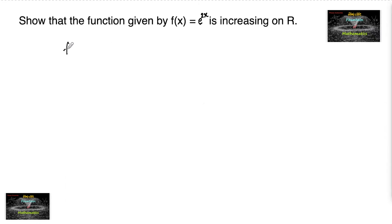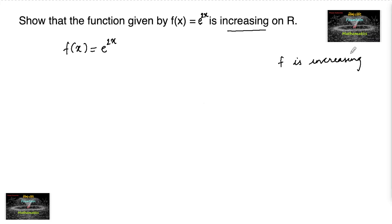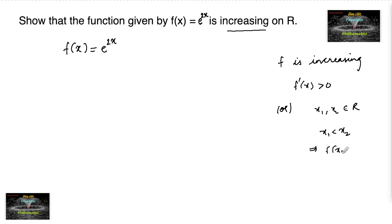Show that a function given by f(x) = e^(2x) is increasing on real numbers ℝ. Since we know that a function is said to be increasing either if f'(x) is greater than 0, or for x1, x2 belonging to the given set such that x1 less than x2 implies f(x1) is less than f(x2). So in either of these two cases we can say the function is increasing.